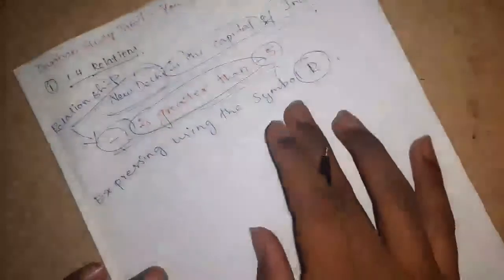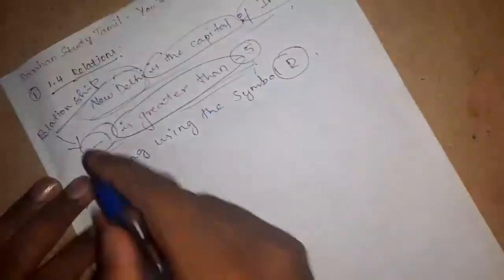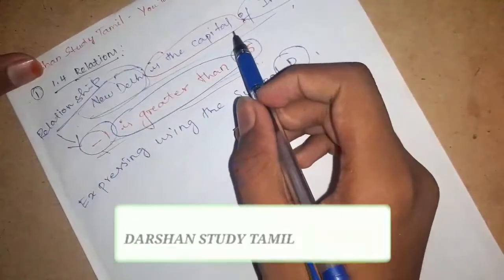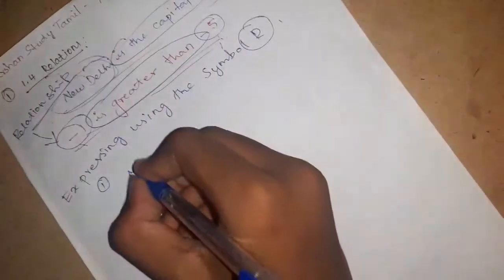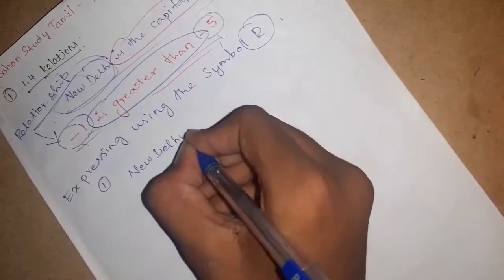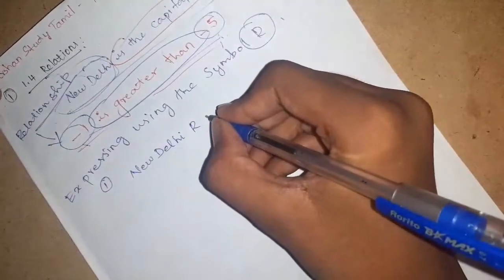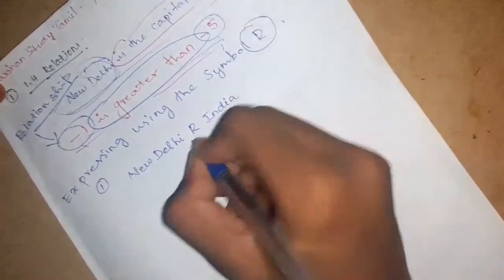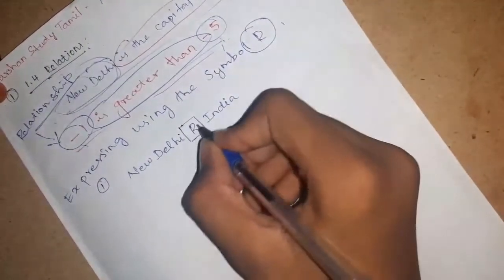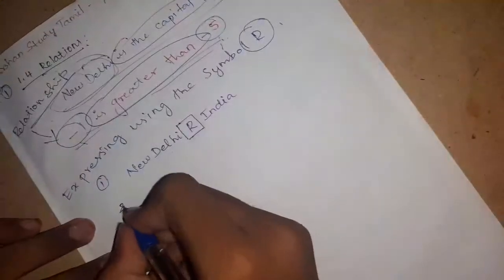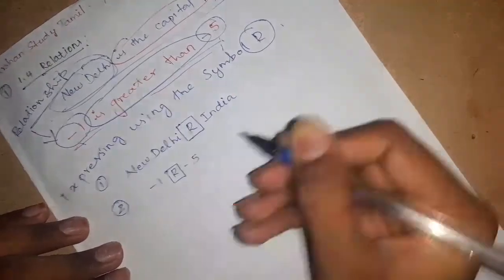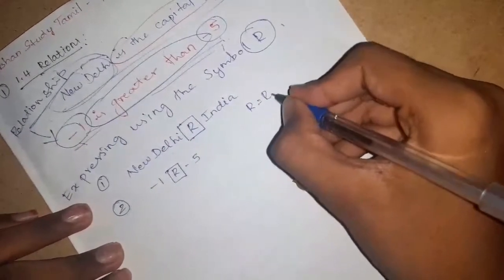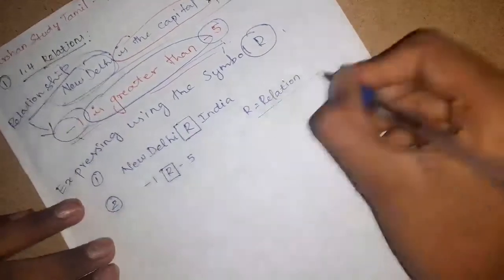In the 3rd place, I will tell you about this example. My first relationship — New Delhi or India — is a relation; you can see the ordered pair. Second: minus 1 or minus 5 — that is a relation. The relation is expressed in Tamil as well.